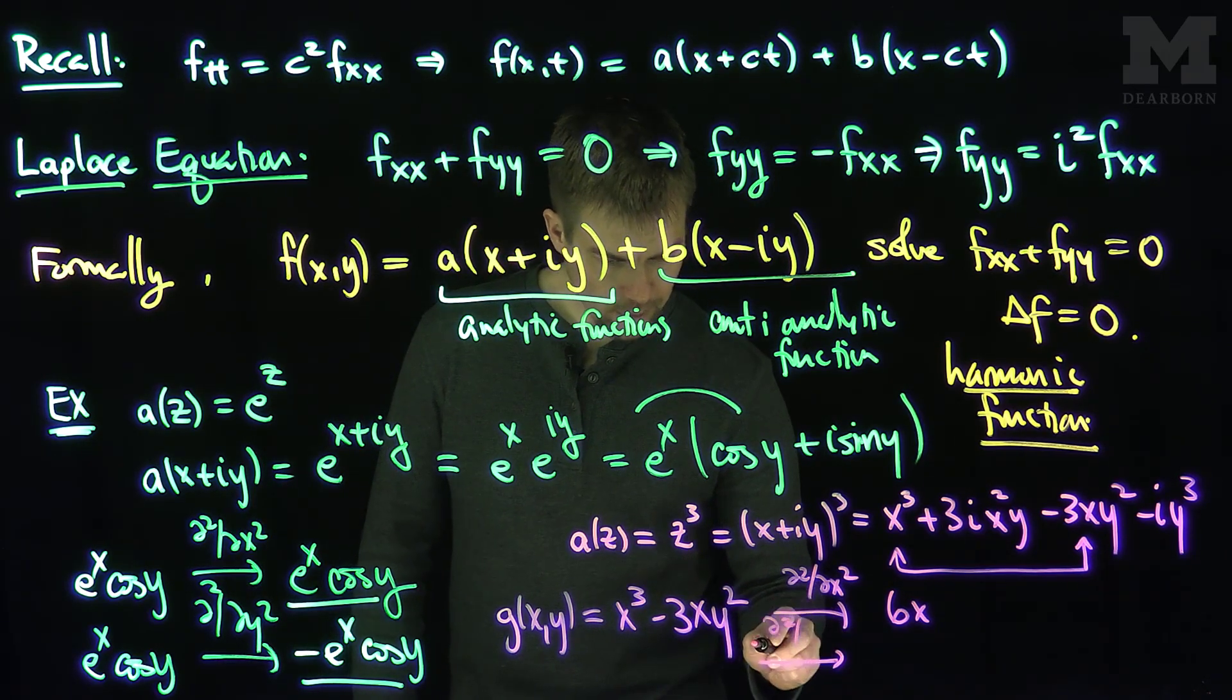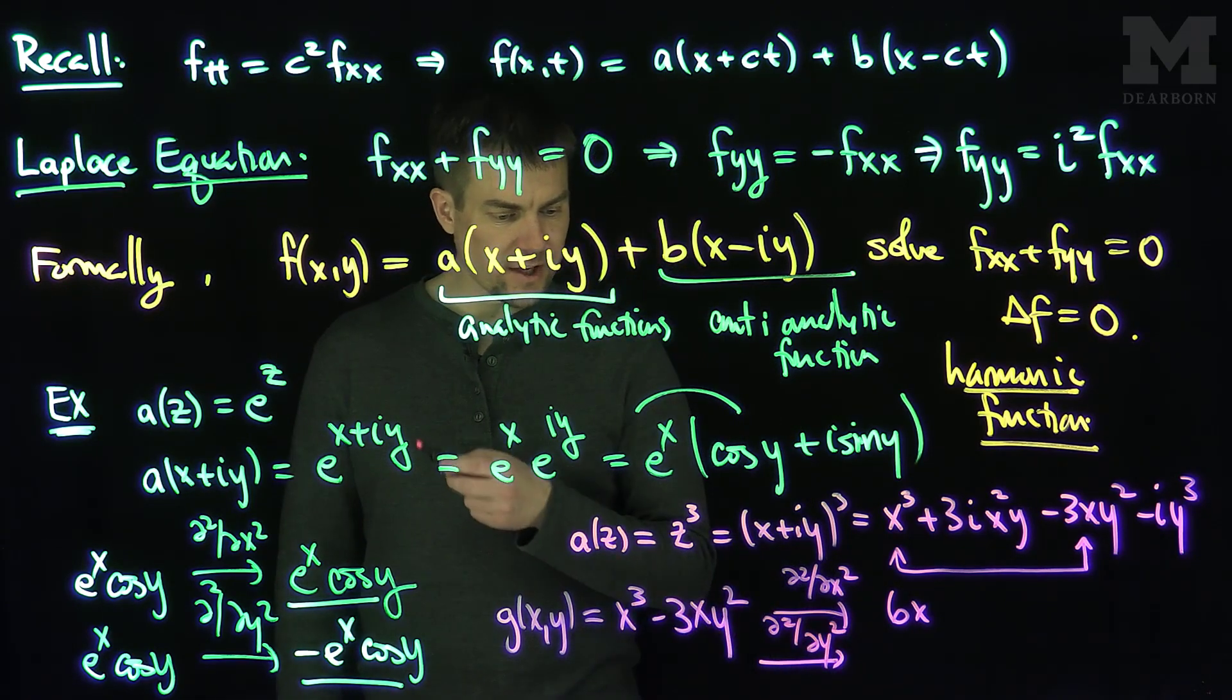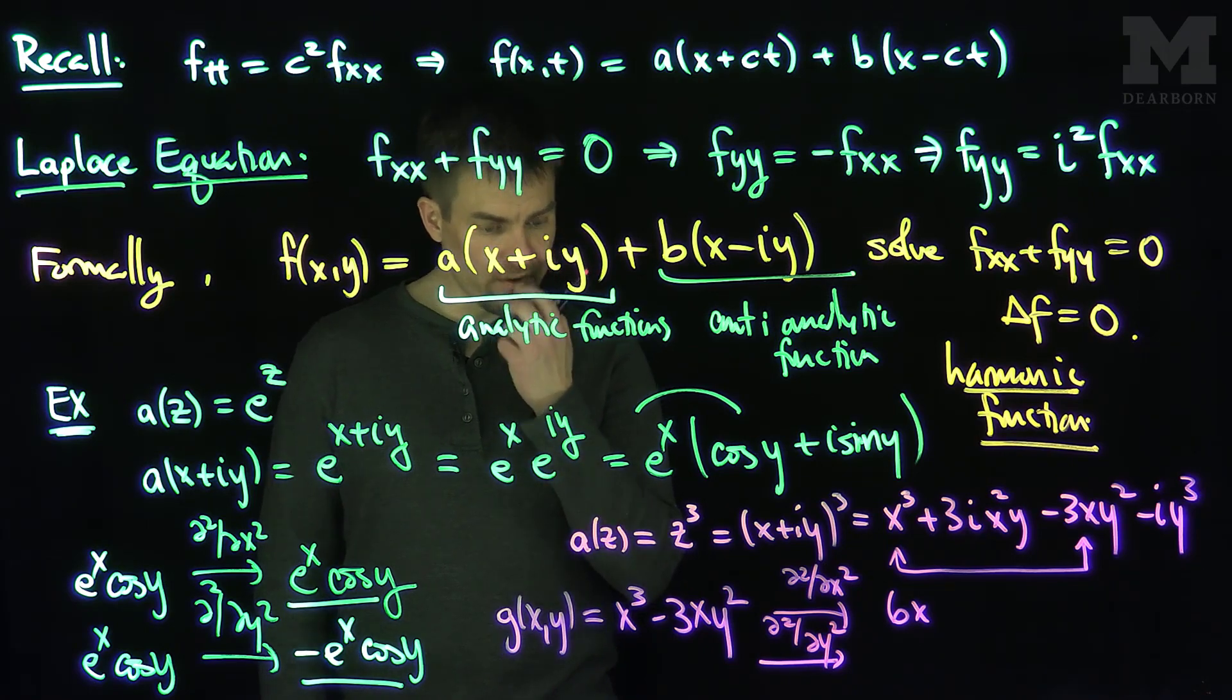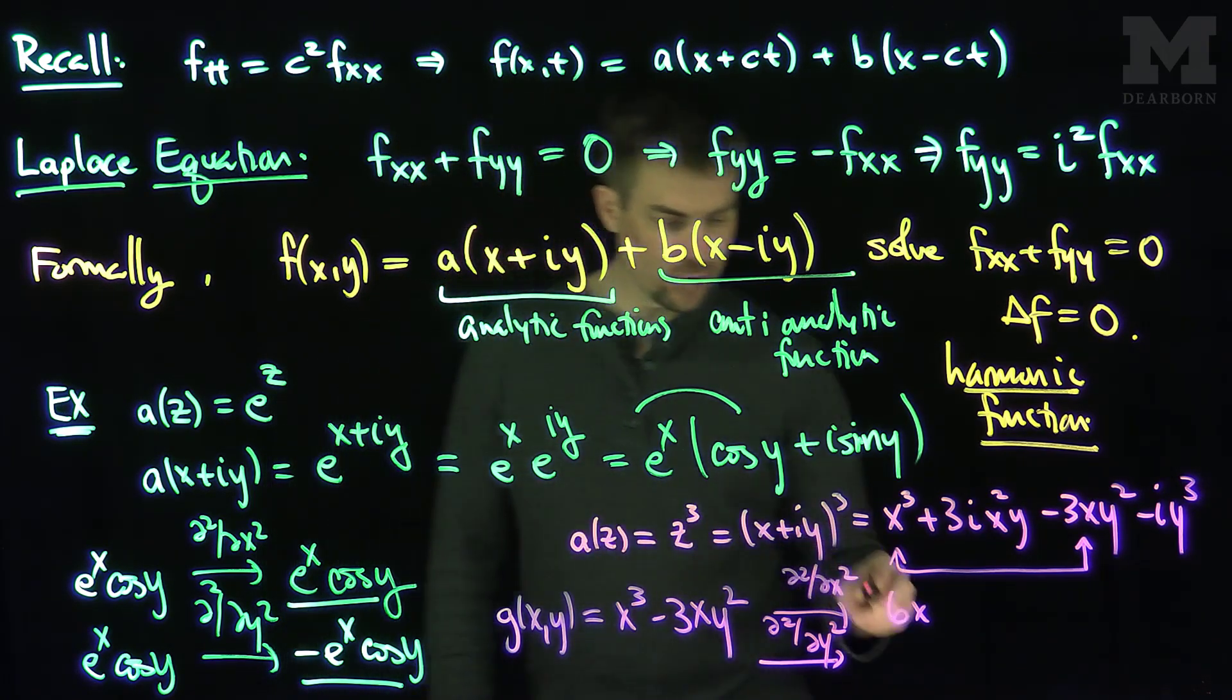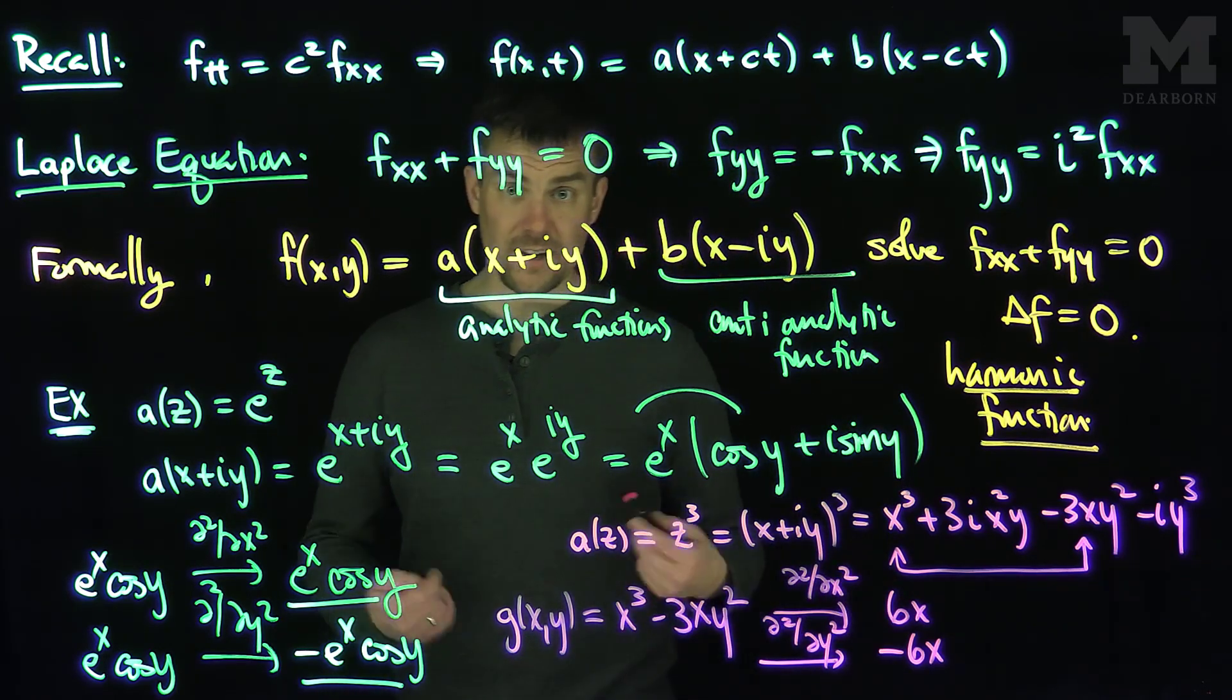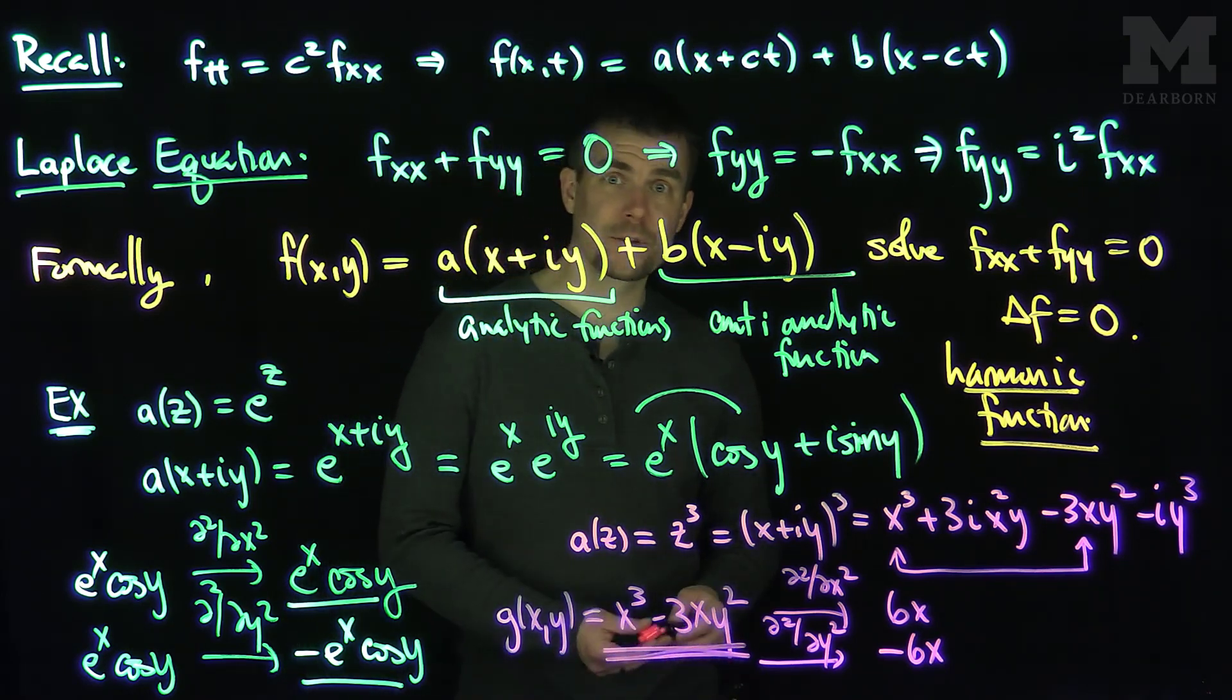If I do two y derivatives of this, what will happen? Partial squared f, partial y squared. If I do one y derivative, I'll get negative 6xy. If I do two y derivatives, I do the y derivative of negative 6xy, that'll just be a negative 6x. So lo and behold, if I add the second x derivative to the second y derivative, I get zero. So this function over here is also a harmonic function.